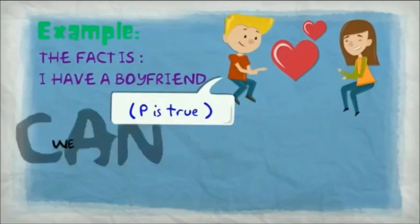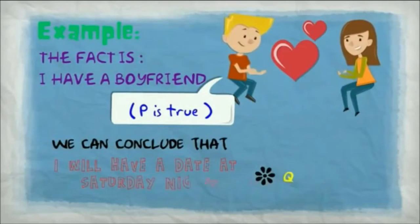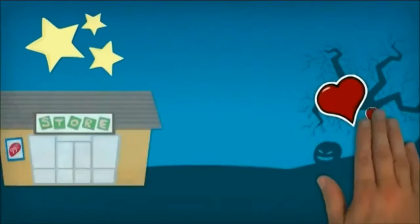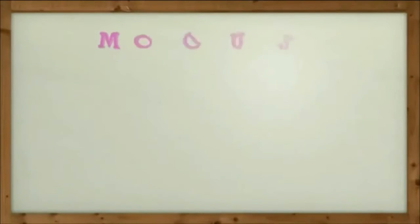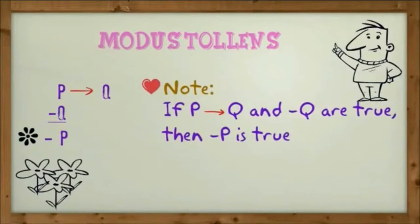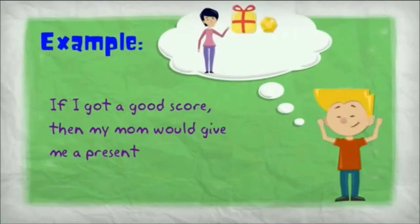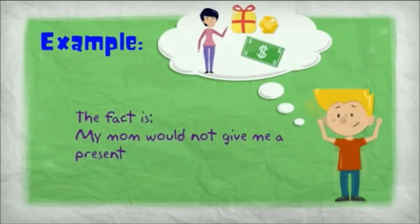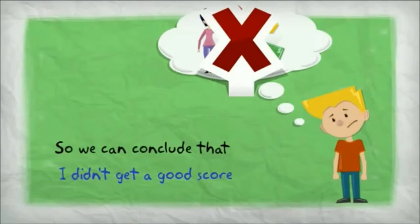The first is modus ponens. Let's check this example. If I have a boyfriend as P, then I will have a date on Saturday night as Q. The fact is I have a boyfriend, so P is true. We can conclude that I will have a date on Saturday night, so Q is true.